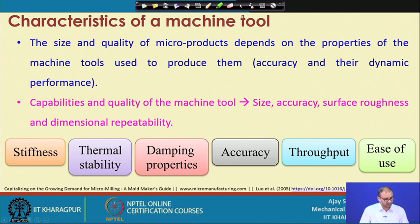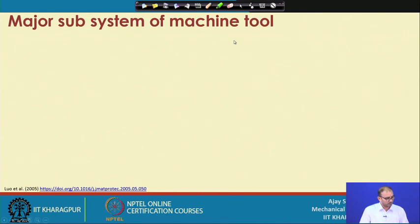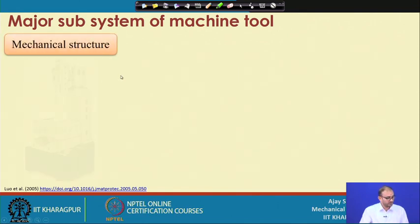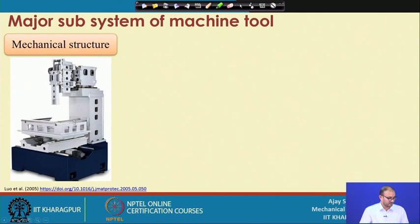Let us go ahead in this topic. What are the major subsystems of the machine tool? The machine tool has different components, but we have categorized a few components in one group and others in another group. The first thing is the mechanical structure — this is a box-type structure onto which you have to mount or assemble many things.